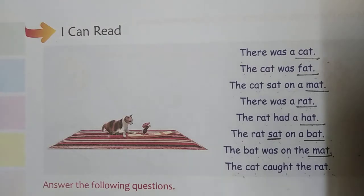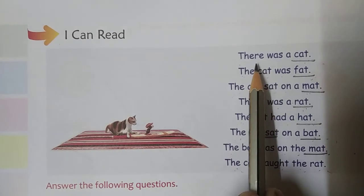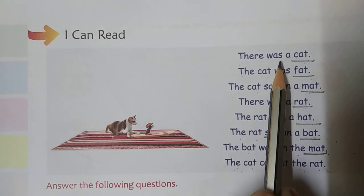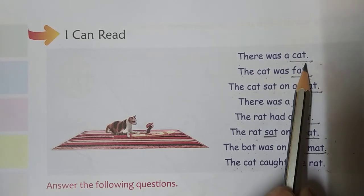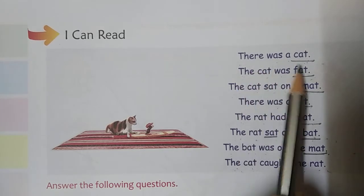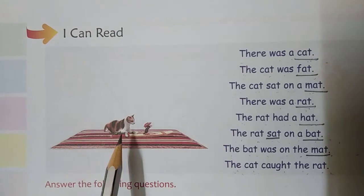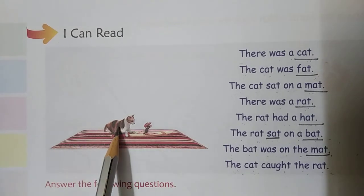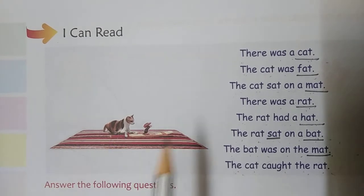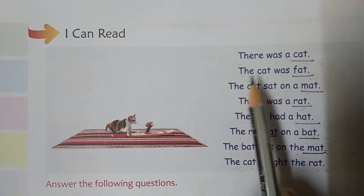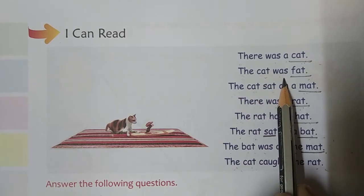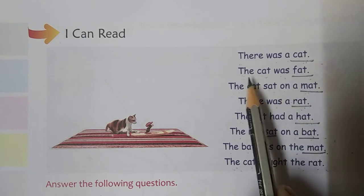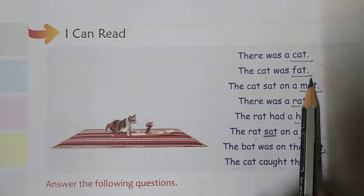I can read. T-H-E-R-E, there. W-A-S, was, a C-A-T, cat. There was a cat. Look here, here is a cat. T-H-E, the, C-A-T, cat. W-A-S, was, F-A-T, fat. The cat was fat.